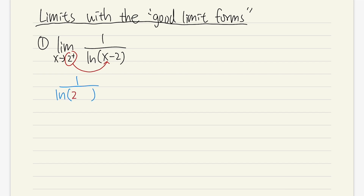and then x is now 2 plus, and then we still have that minus 2. I'll be drawing arrows because technically we are doing limits. We know 2 minus 2 is 0, so it looks like we have 1 over ln of 0. But hold on — this is actually 2 plus. When we have 2 plus minus 2, this gives us 0 plus. 2 plus is like 2.001, because we're approaching 2 from the right-hand side, so it's slightly bigger than 2. When we subtract 2, we get like 0.001 — we are getting towards 0 from the right-hand side. That's why we have the plus.